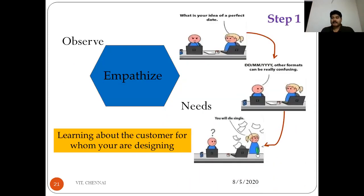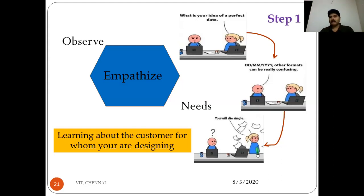Stage one is named empathize. Empathize means understanding the person for whom we are going to design a product or service — learning about the customer for whom you are designing. You need to observe and gather information, keeping yourself in the shoes of the customer, understanding their pains and gains, immersing yourself from their point of view rather than being judgmental.